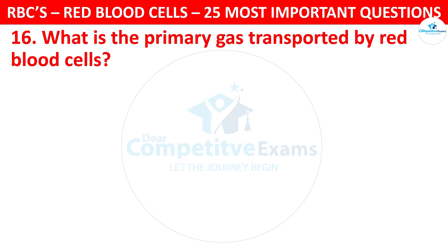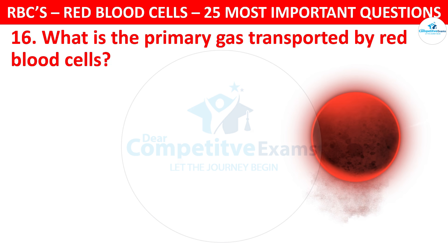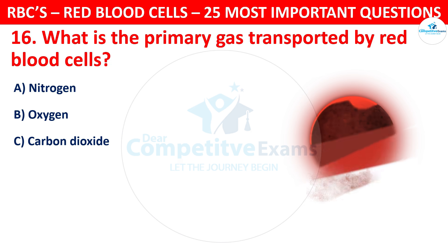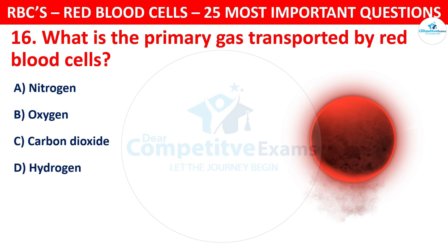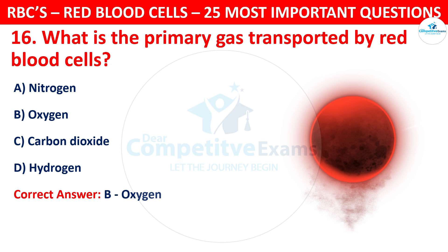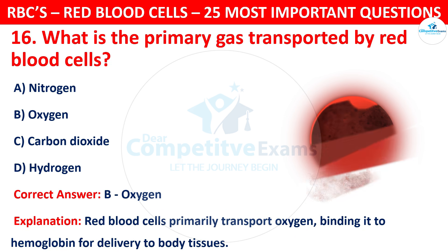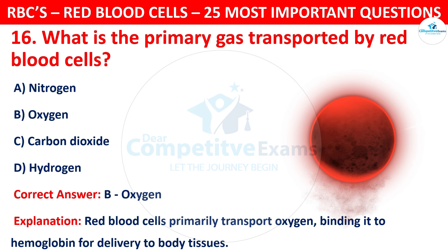Question 16. What is the primary gas transported by red blood cells? Your options are: Nitrogen, Oxygen, Carbon Dioxide, or Hydrogen. The correct answer is B, that is Oxygen. Red blood cells primarily transport oxygen, binding it to hemoglobin for delivery to body tissues.